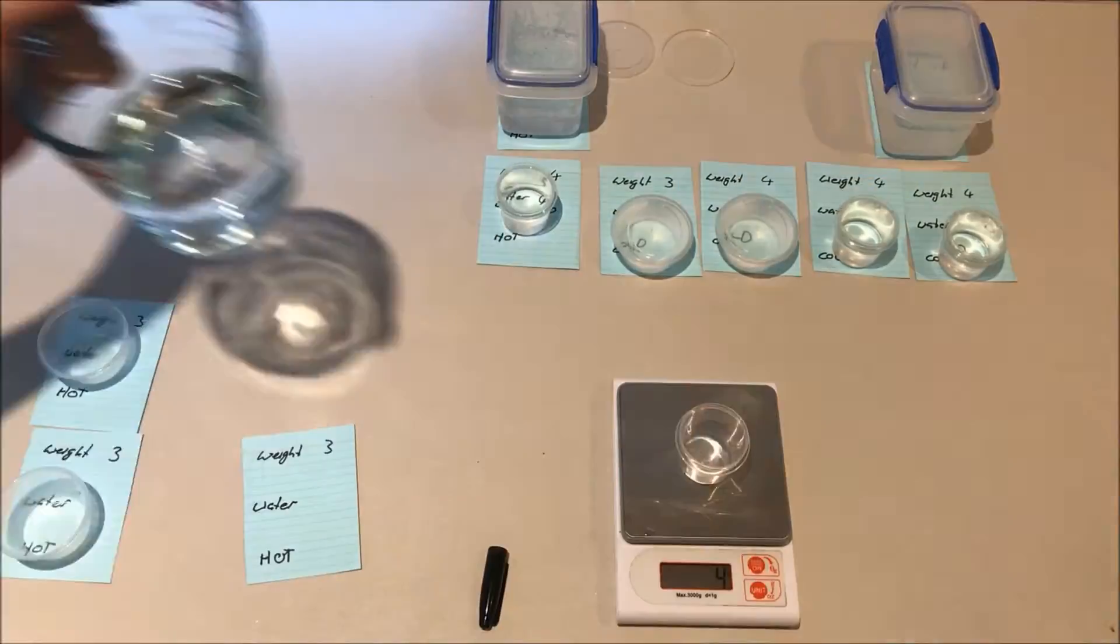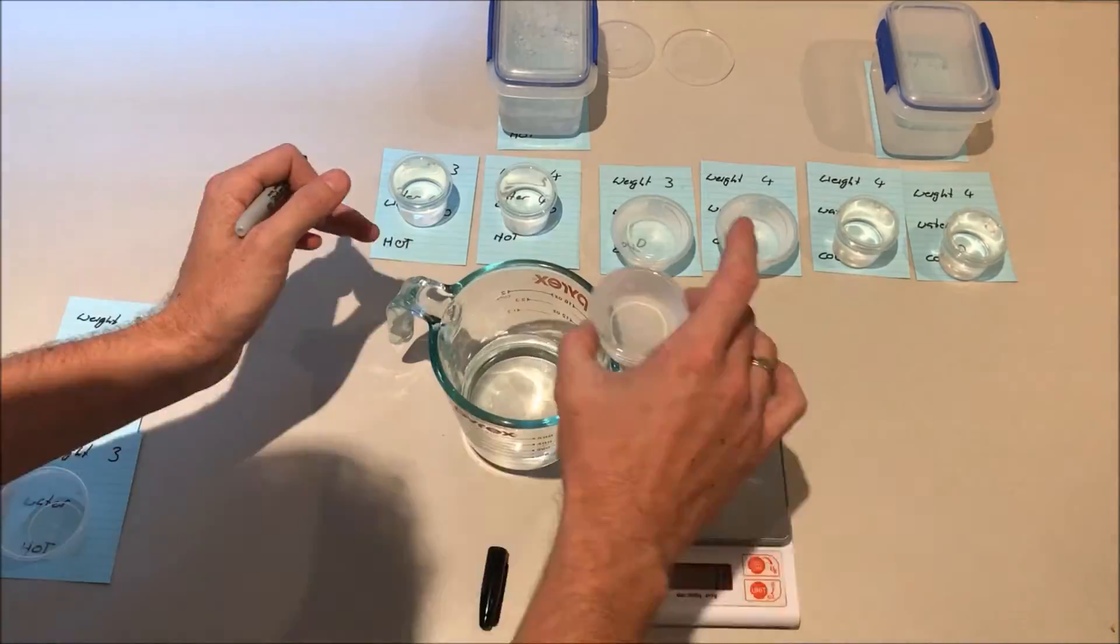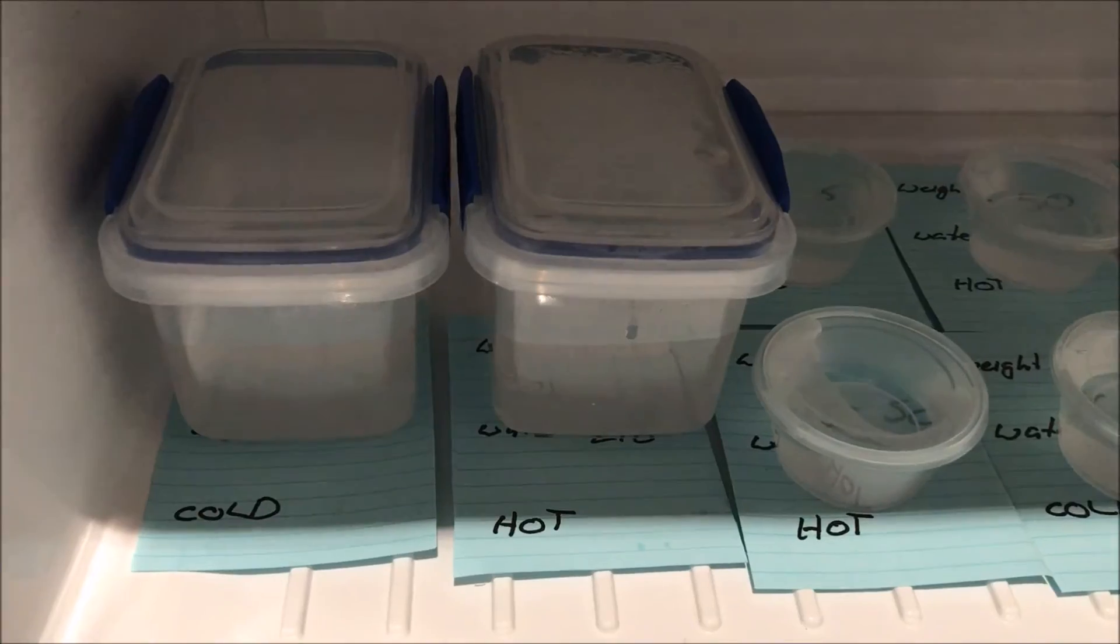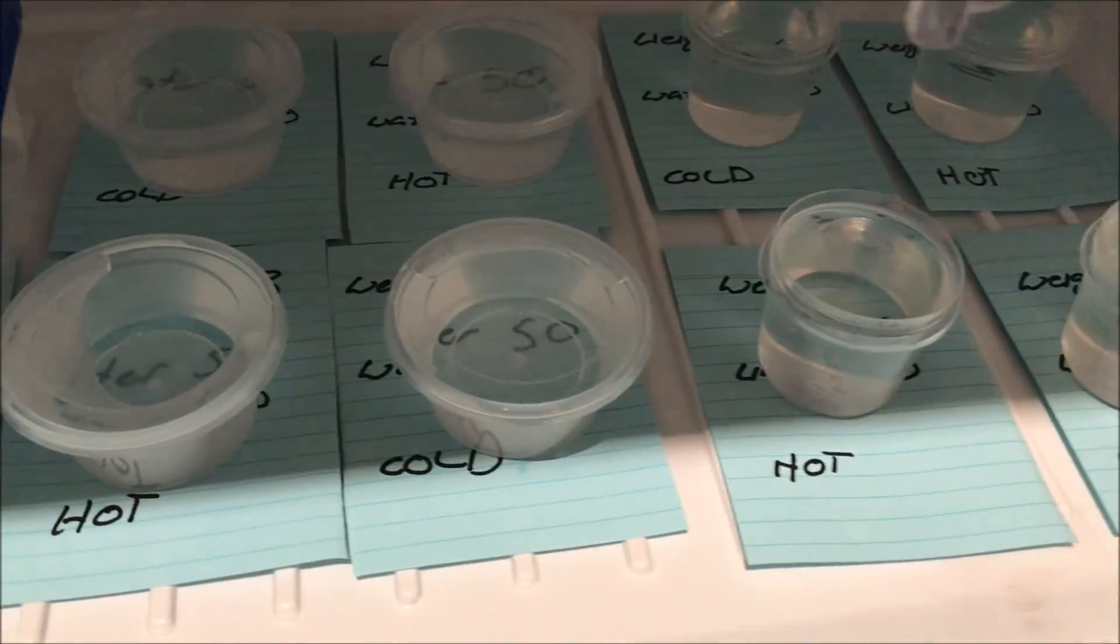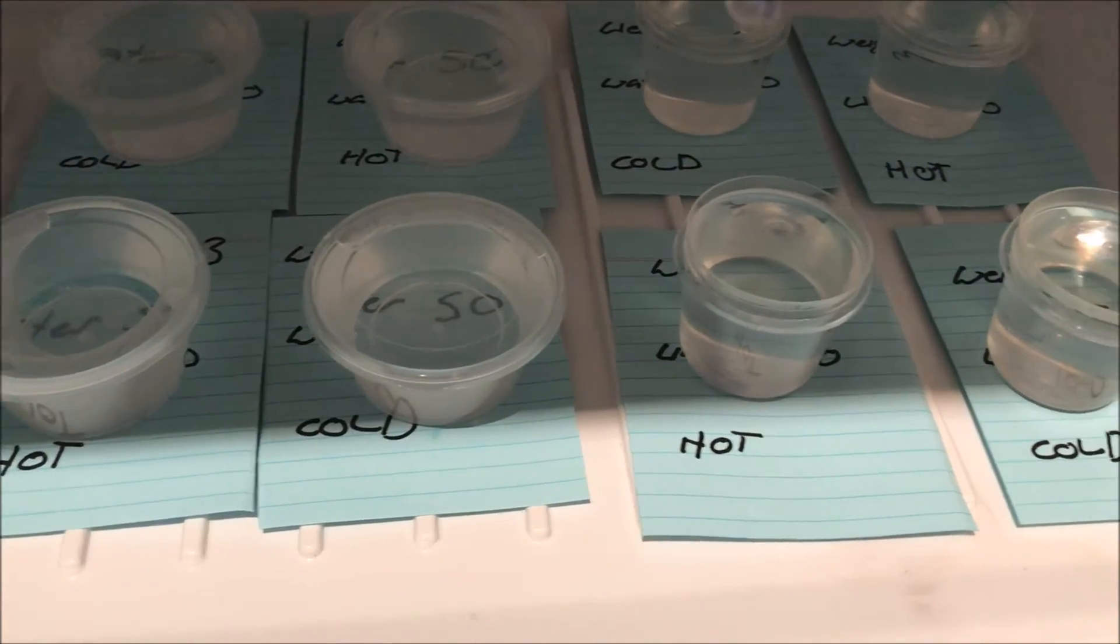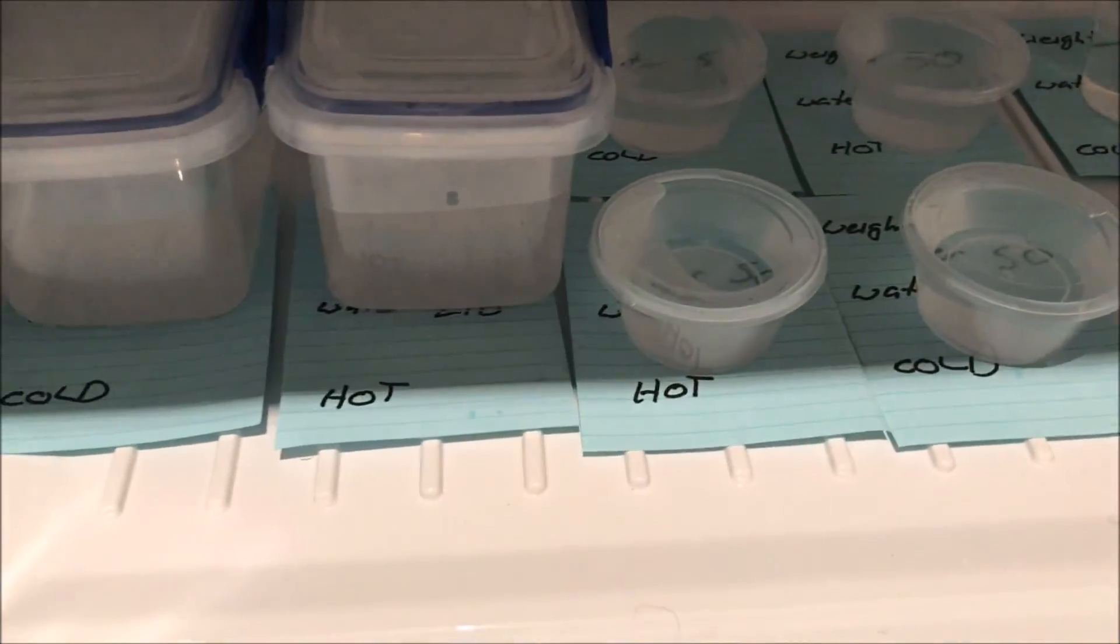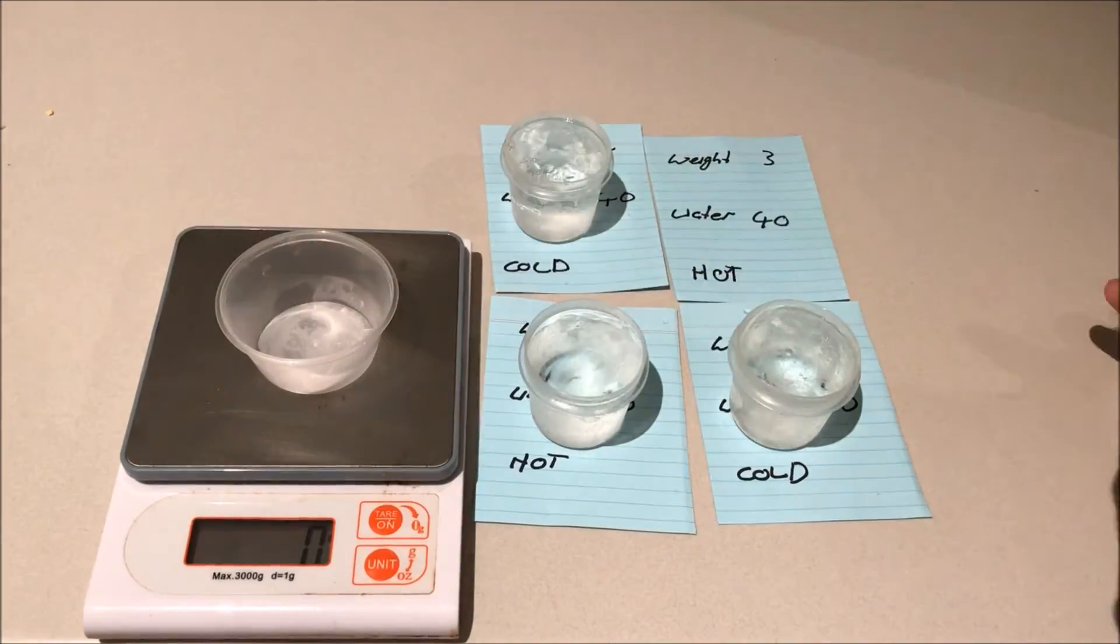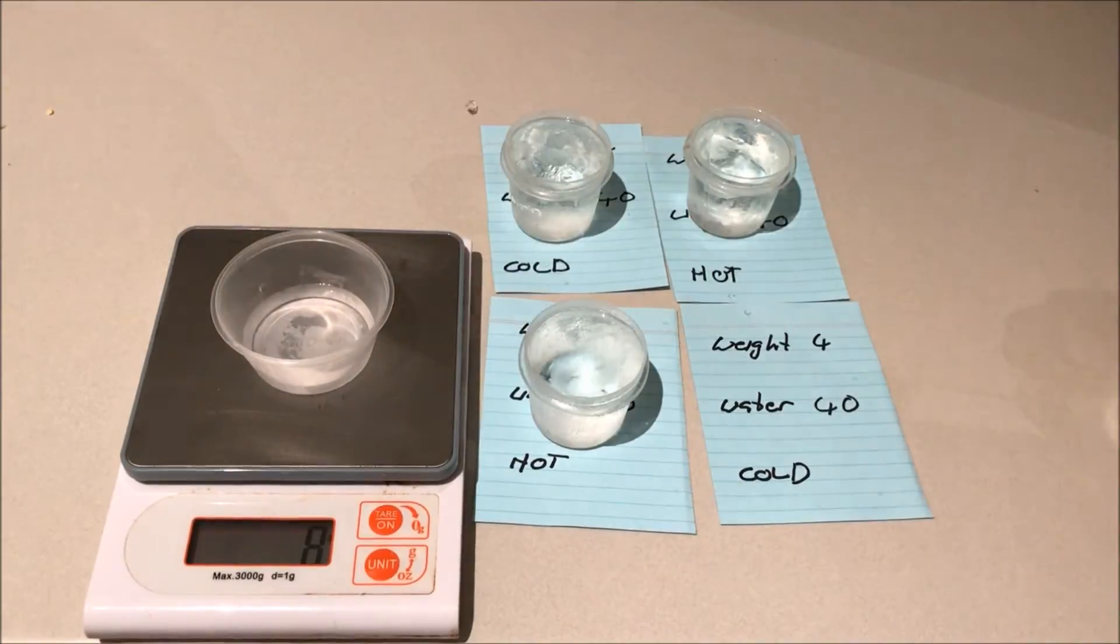If the evaporation explanation is correct, we would also expect a few other things to happen. Containers with less surface area to volume would evaporate less water, causing hot and cold water to freeze more similarly. Also if the temperature was reduced from boiling to around 80 degrees, then we have less energy in the system to evaporate water and the result should minimize the effect as well.